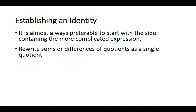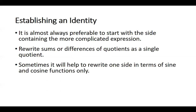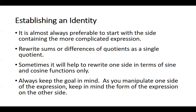Rewrite sums or differences of quotients as a single quotient. Whenever you've got rational expressions being added or subtracted, find a common denominator and write them as a single rational expression. Sometimes it helps to rewrite one side in terms of sine and cosine functions only — it's really easy to work with sines and cosines and then get to other trigonometric functions from there. And always keep the goal in mind — always think about where you're trying to get to.